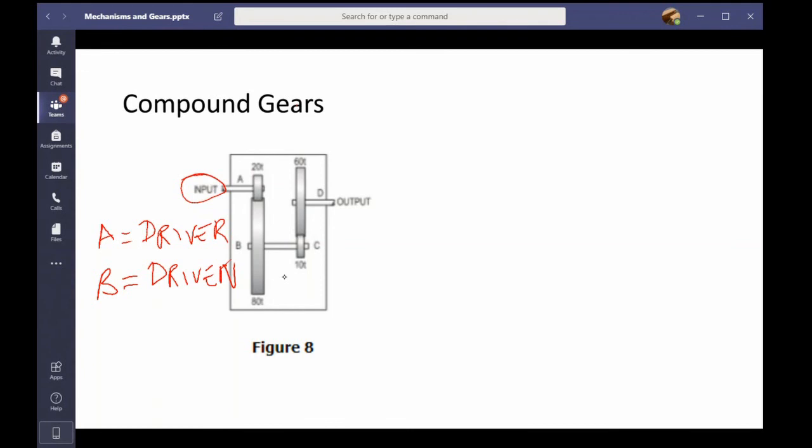And then C driver again and D driven. So basically I've got to do the same thing A B, so driven over driver for A and B. So that's going to be 80 divided by 20, and we're going to have that as being four to one. Input A goes around four times every time that goes around once.